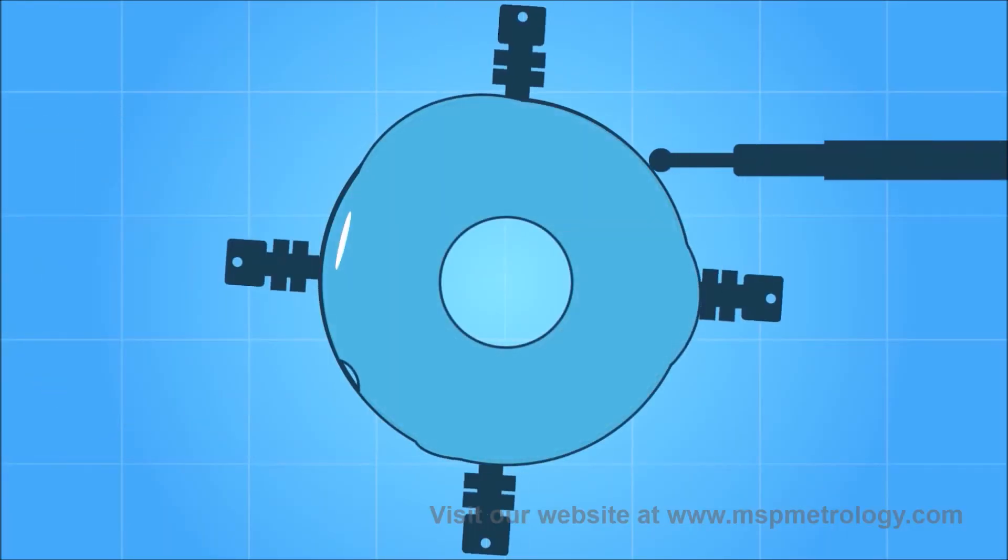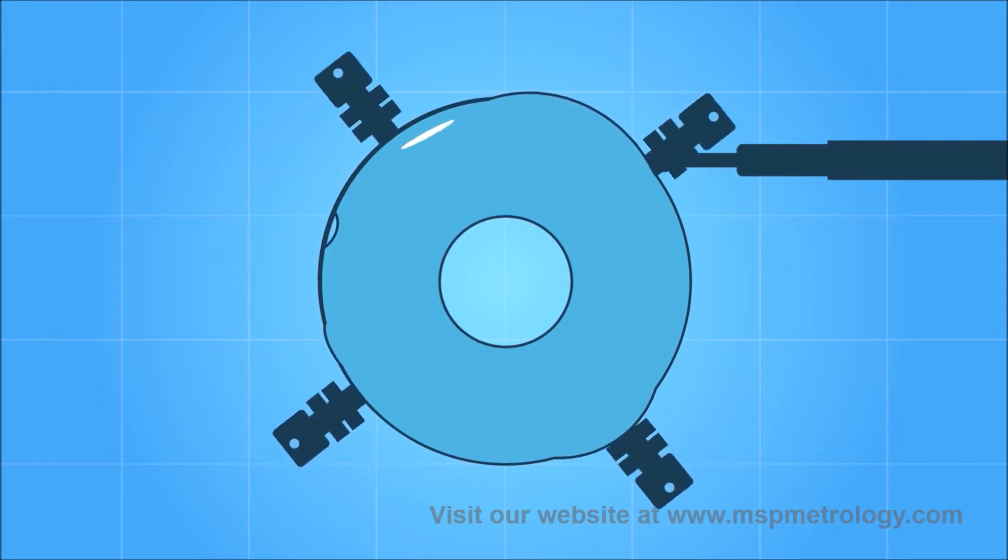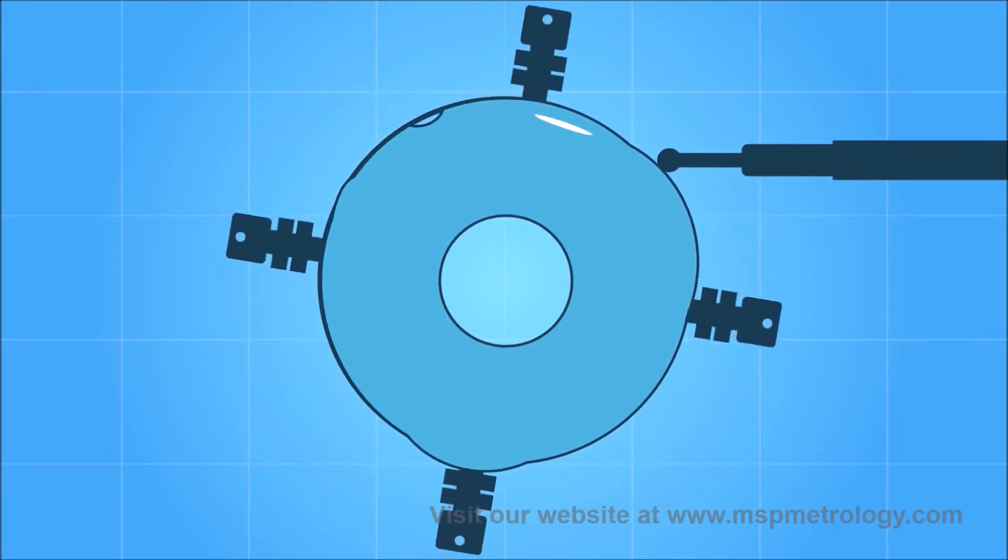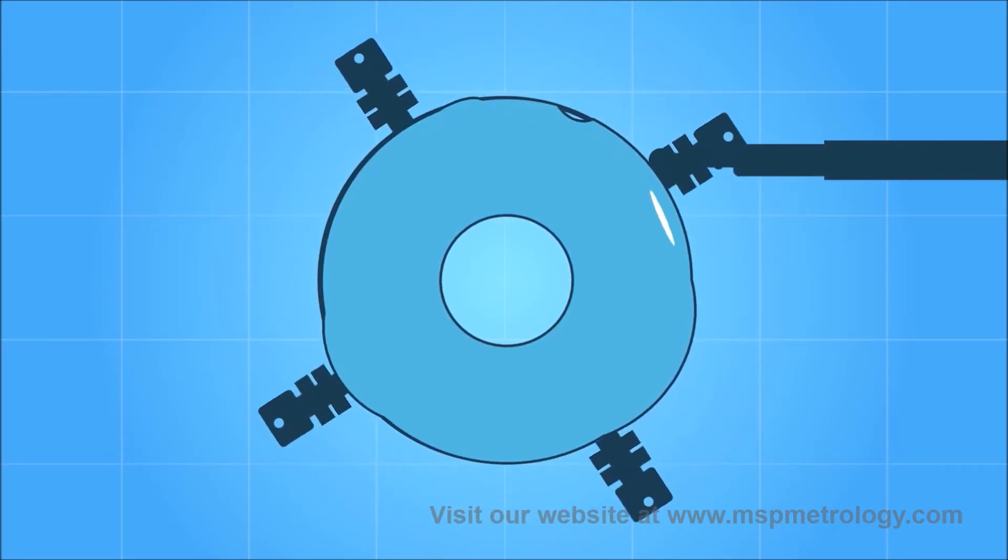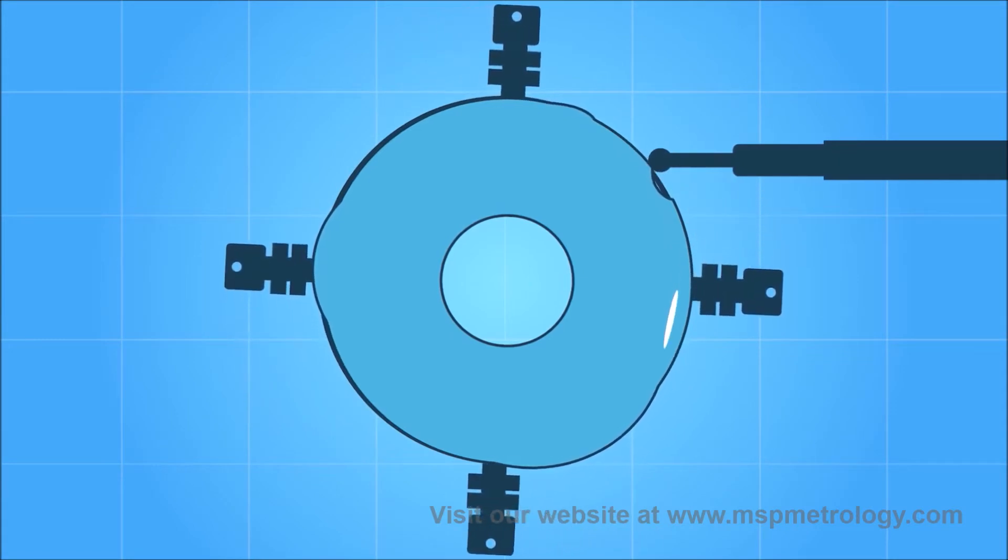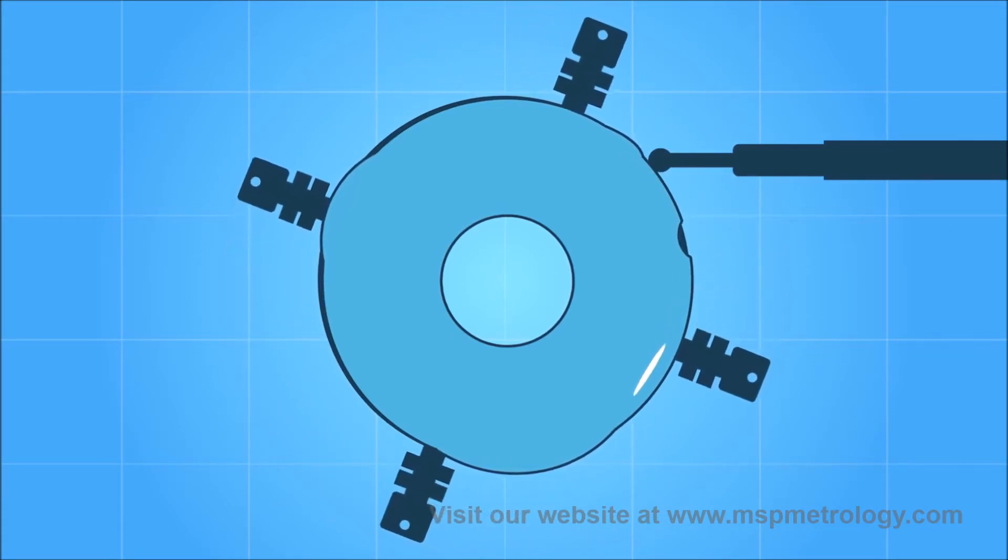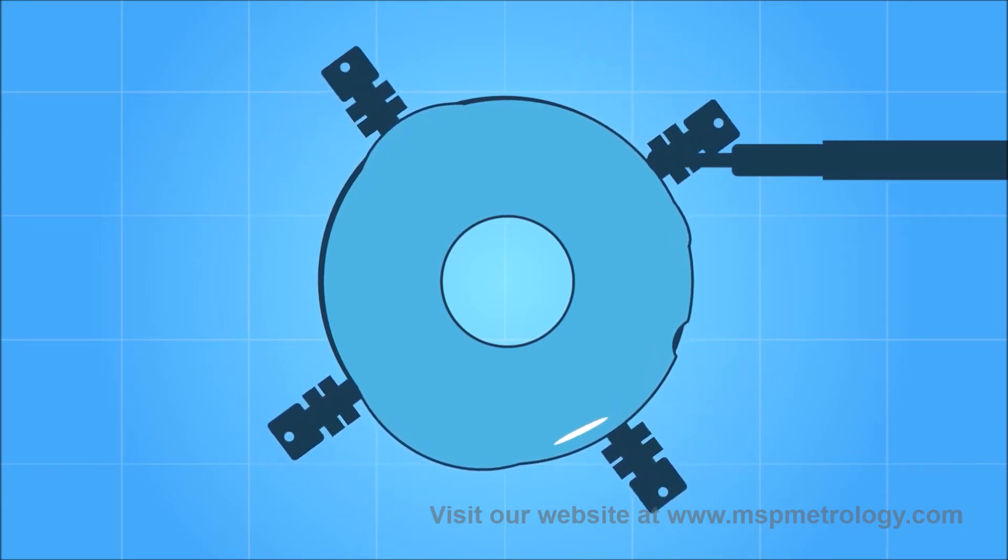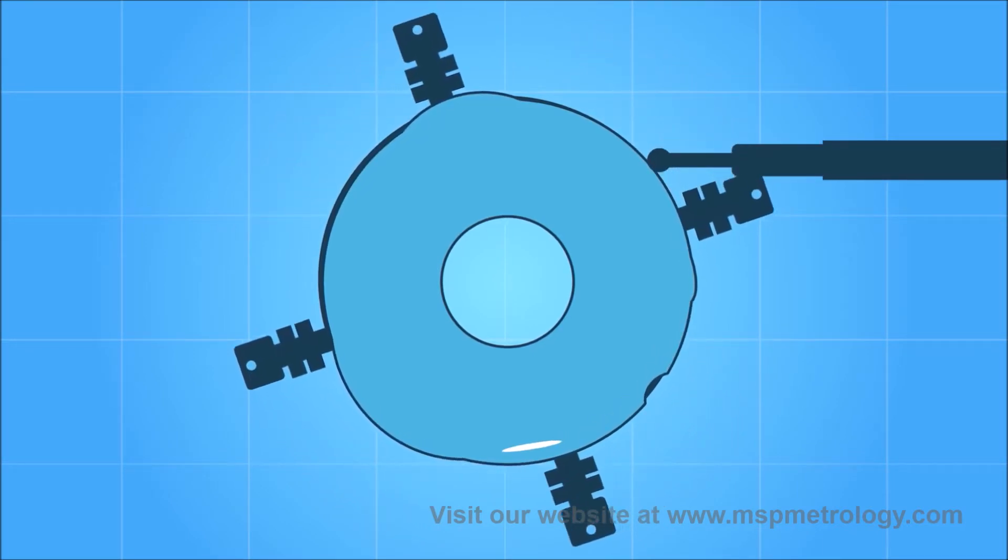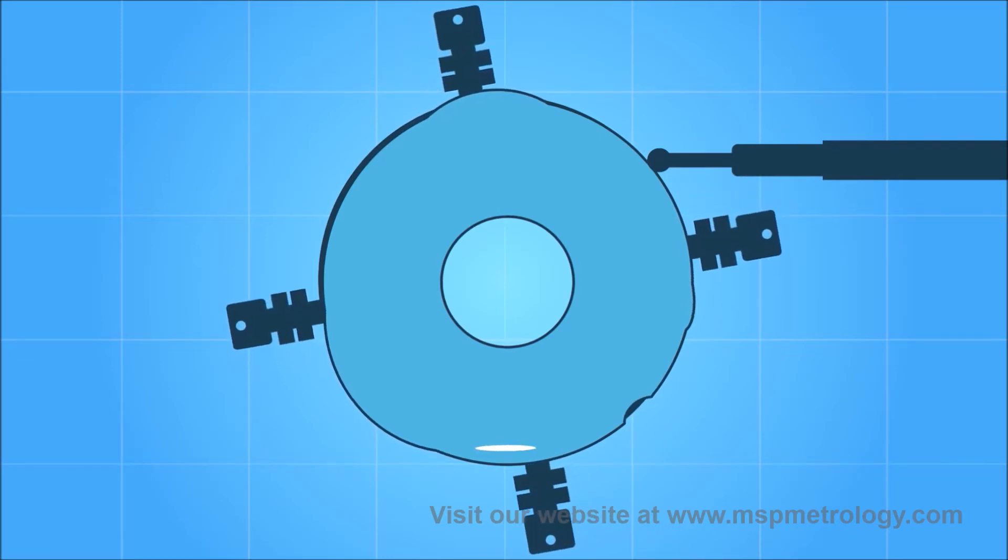During rotation, a transducer measures radial variations on the surface of the part with respect to the spindle's axis. Limited only by the precision of the spindle and transducer gauge head, the extrinsic datum method can be used for the most extreme roundness specifications and parts with complex surface features.